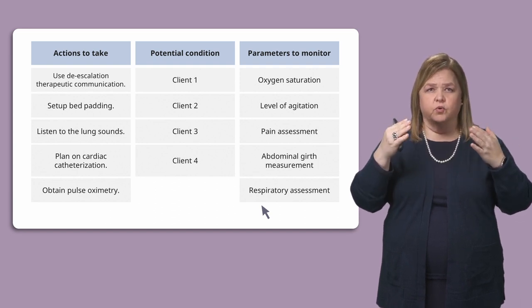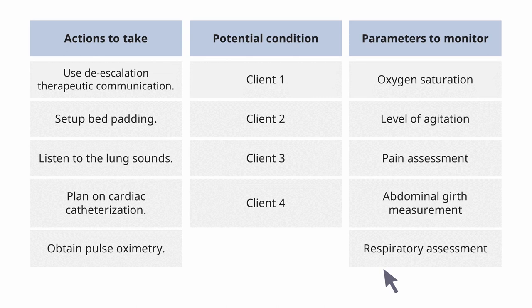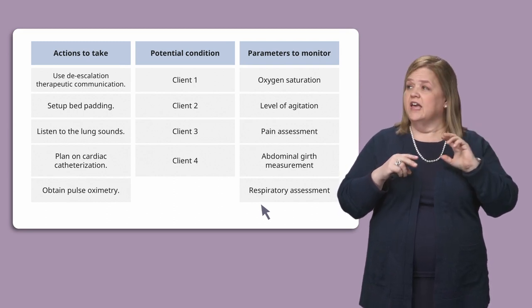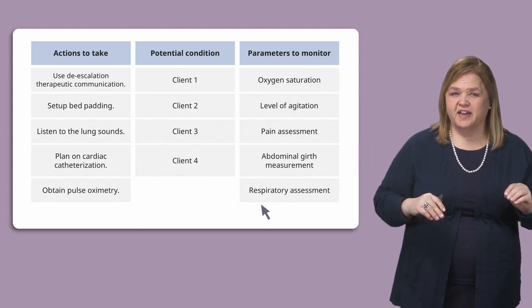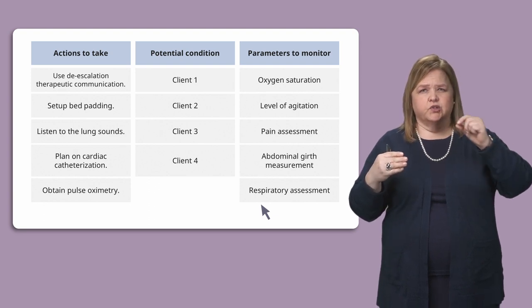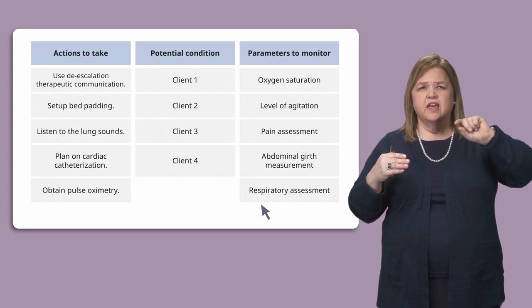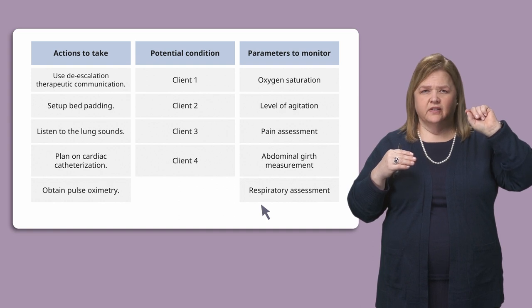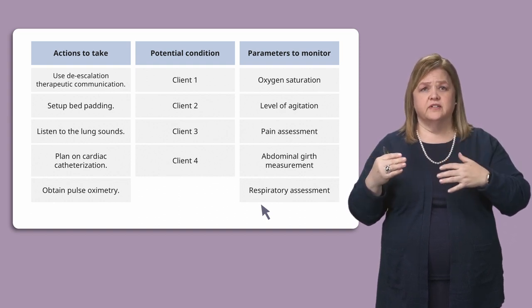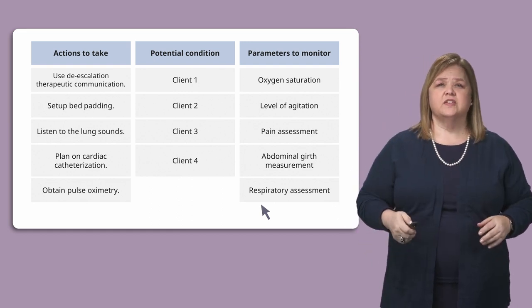The first column is actions to take, then potential condition, and then parameters to monitor — those are always the three columns in a bowtie question. The directions say: complete the diagram by dragging from the choices below to specify which condition the priority client is most likely experiencing, two actions the nurse takes to address the assignment, and two parameters the nurse monitors to avoid complications and check the client's progress.